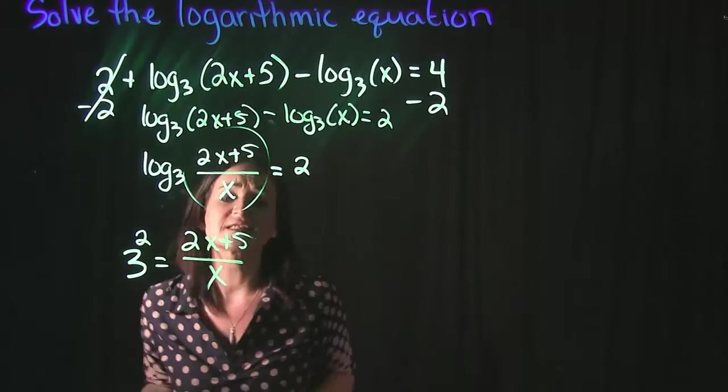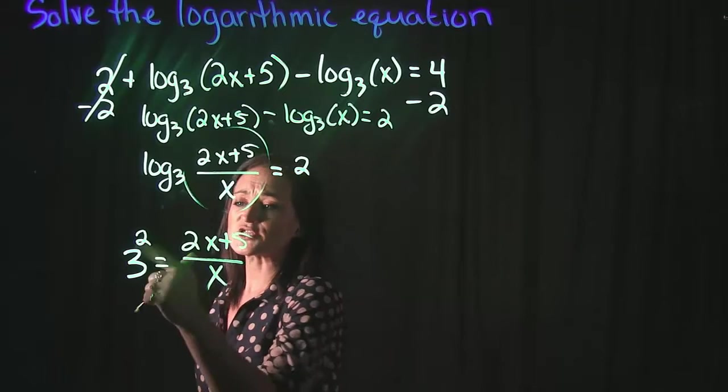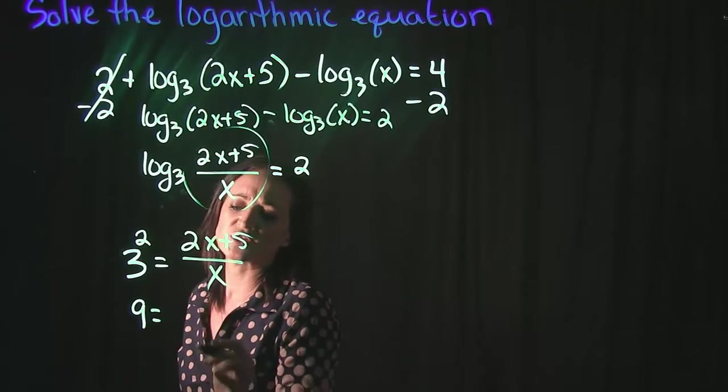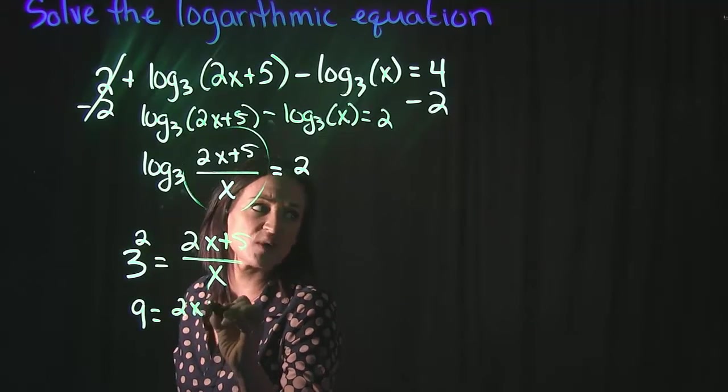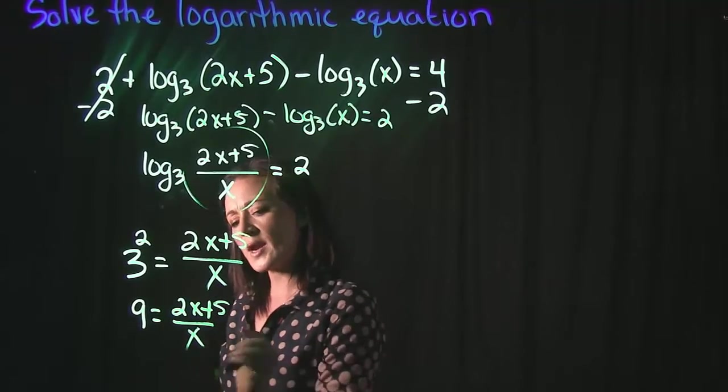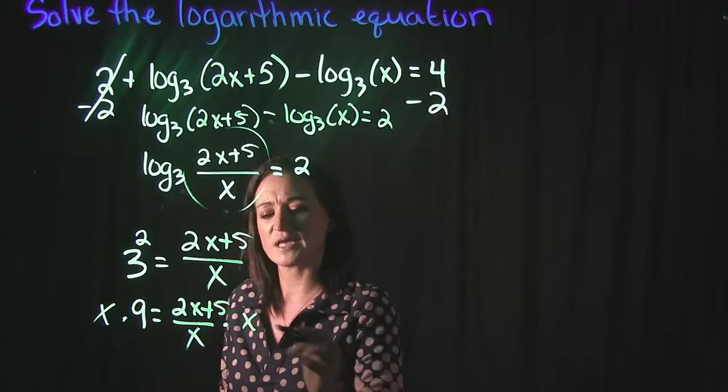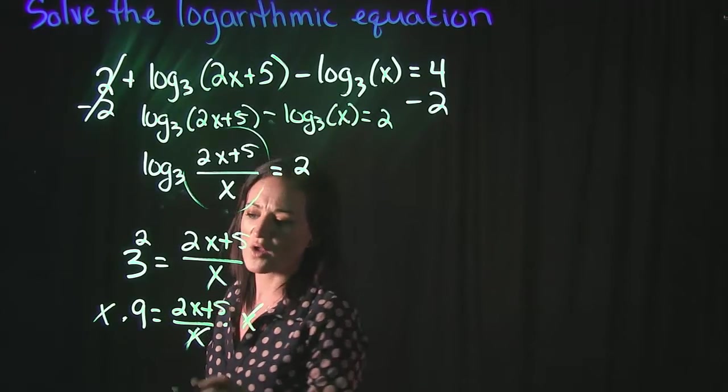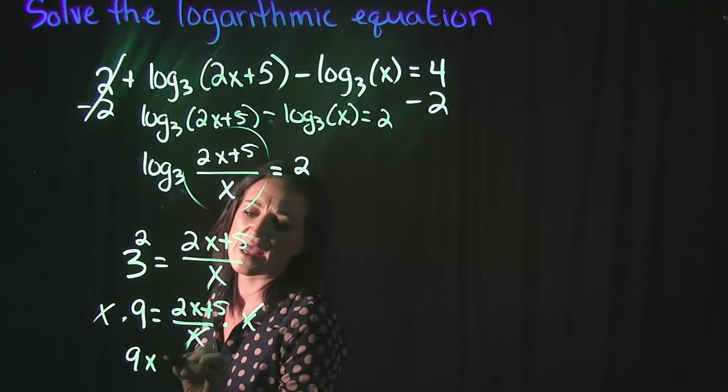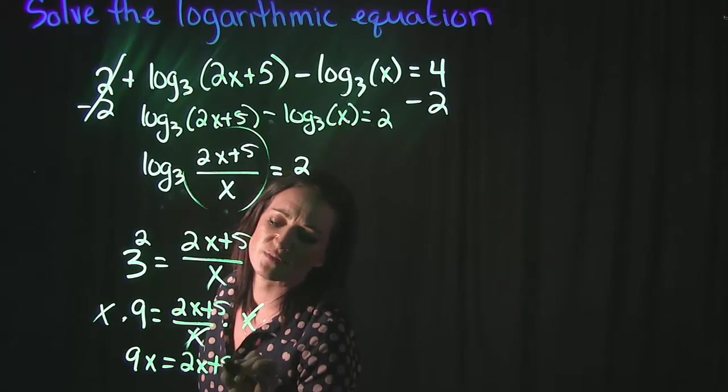And then I can use this to solve. So 3 squared is equal to 9, so I have 9 is equal to 2x plus 5 over x. We want to get rid of x in the denominator, so we do that by multiplying by x on both sides. That's going to cancel on the right, leaving me with 9x is equal to 2x plus 5.